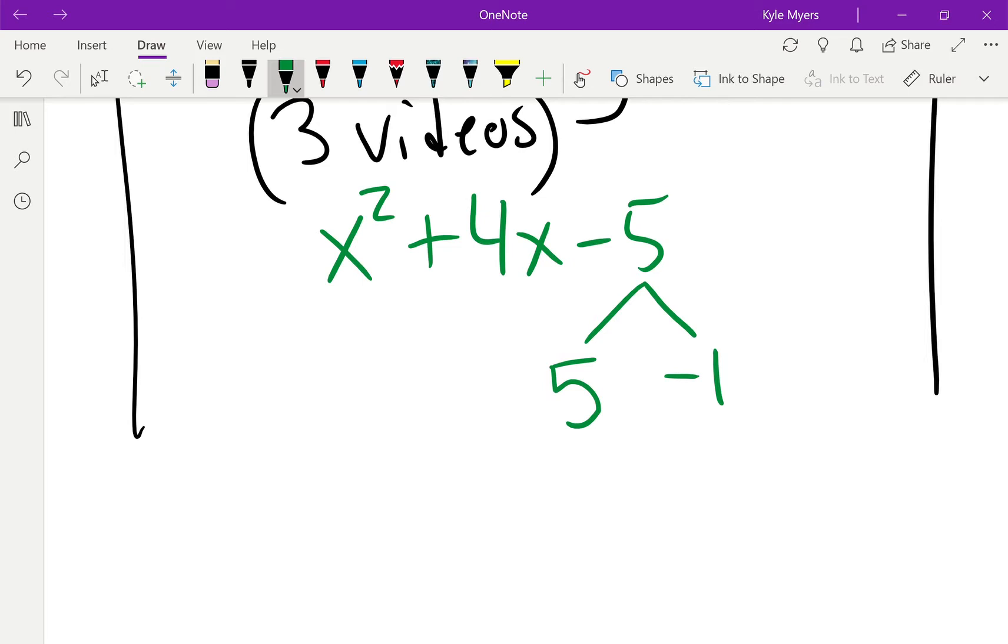If I make the 1 negative, it works. 5 minus 1, positive 5 minus 1 gives me positive 4. If I were to switch it around and make it negative 5 and positive 1, then it wouldn't give me positive 4, and it wouldn't work. So I'm done.